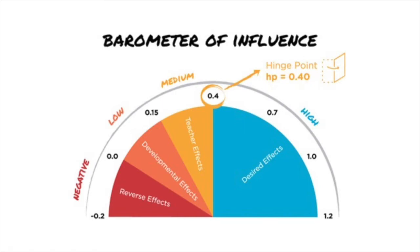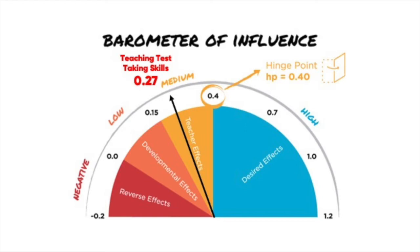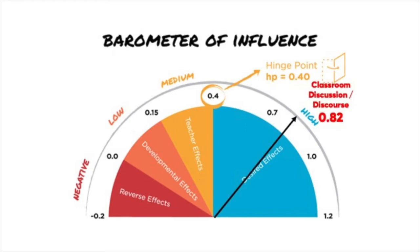On the flip side, practices with an effect size lower than 0.4 we want to pause and reconsider. For instance, teaching test-taking skills has an effect size of 0.27 — it feels like a good practice and we've done it all the time, but that effect size says maybe not. In Hattie's research, classroom discussion and classroom discourse has an effect size of 0.82. We want kids talking in math.